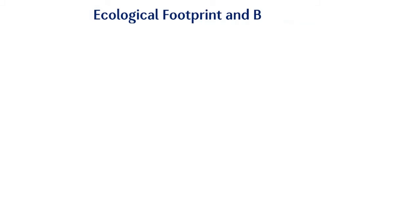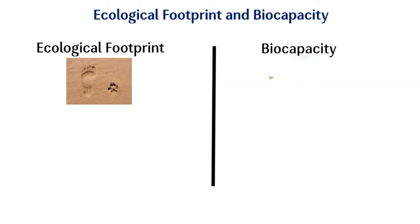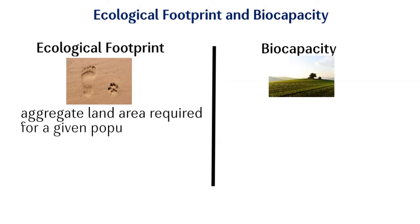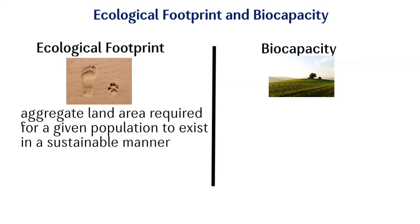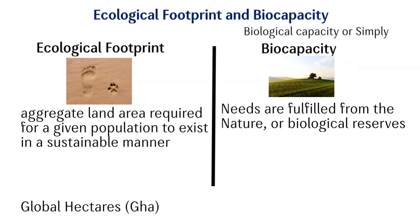Ecological Footprint and Bio-Capacity. As we now know, Ecological Footprint Analysis measures the aggregate land area required for a given population to exist in a sustainable manner. It calculates global hectares required to fulfill human needs. These needs are fulfilled from nature or biological reserves, which we call Biological Capacity, or simply Bio-Capacity.